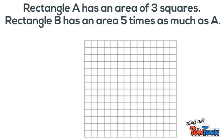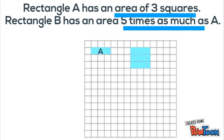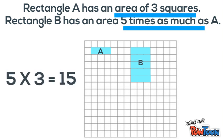Next example: Rectangle A has an area of three squares. Rectangle B has an area five times as much as A. Let's first draw Rectangle A with three squares. Now we know Rectangle B is five times as much, so we can make five copies of Rectangle A. Or we could simply multiply three times five, which gives us 15. So Rectangle B has an area of 15 squares because it's five times as big.